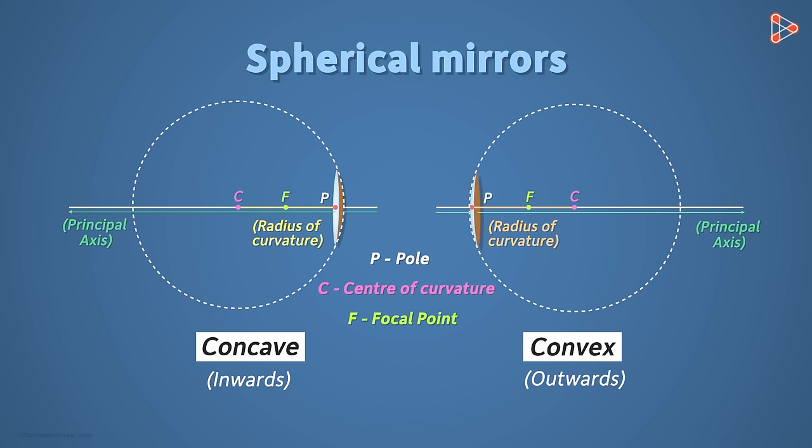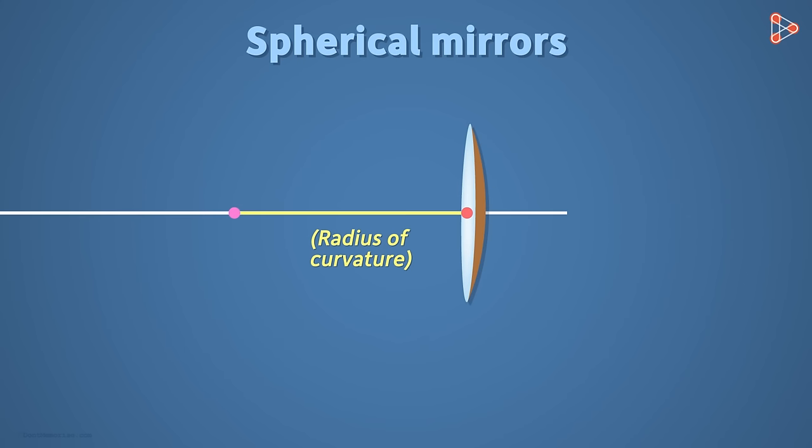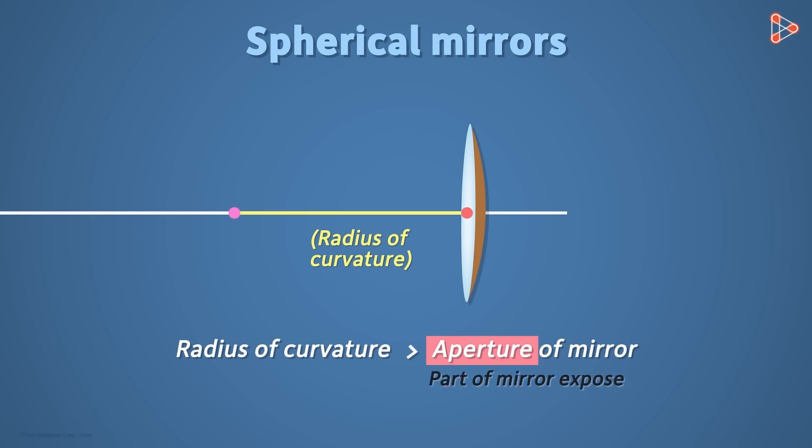We will talk about one last thing in this video, and that is an assumption that we are making all along. We are assuming the radius of curvature of a mirror to be much greater than the aperture of the mirror. Aperture, in simple terms, is that part of the mirror which is exposed to light.